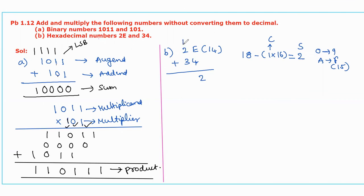We write the sum 2 at this place and forward the carry 1 to the next digit position. Then 1 plus 2 plus 3 equals 6. The resultant value is 62 base 16, where 16 is the radix of the number system. This is the sum of the hexadecimal numbers.